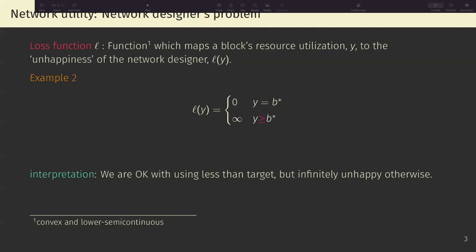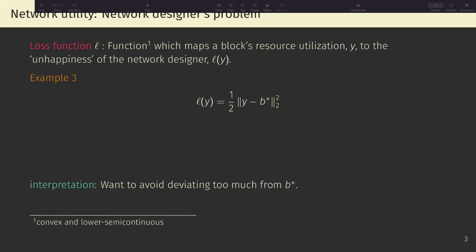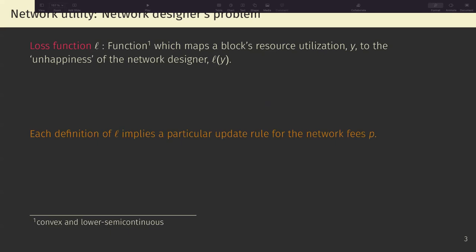A second example is quite similar, but here, instead of Y being different from B star, it's Y larger than B star, meaning that we're okay with using less than the target expenditure, but we're infinitely unhappy otherwise. Or a third example can be given by this quadratic norm here, which can be interpreted as we want to avoid deviating too much from the target B star, so we don't want to spend too little or too much in comparison to the target. However, many definitions of L exist. One can come up with whatever definition of L such as long as a few technical conditions are satisfied, basically that it's convex and lower semicontinuous. And, as we will see later, each definition of L will imply a different update rule for the network fees.